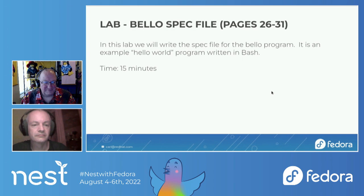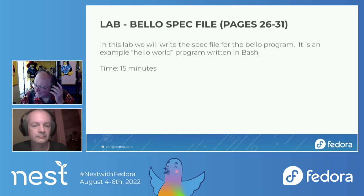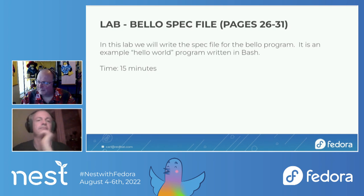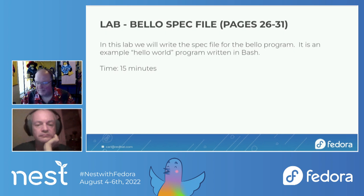Here's our first program: a hello world program written in bash called bello. We're going to finish filling out the spec file for it — we started it with RPMDev-NewSpec in the previous lab. This will be pages 26 through 31 in the PDF guide — don't go past page 31, that's where the bello part ends and the next example begins. All the commands are listed there. Work on this for about 10 minutes and then check in if we need more time.